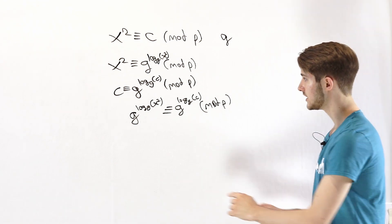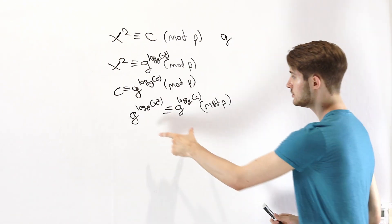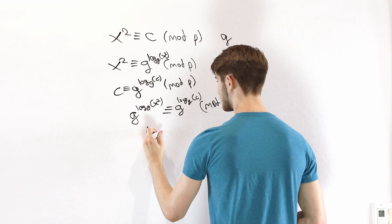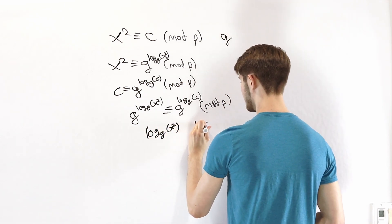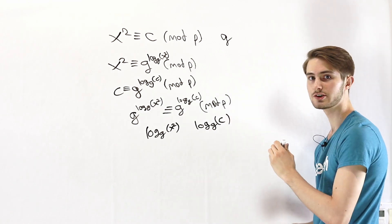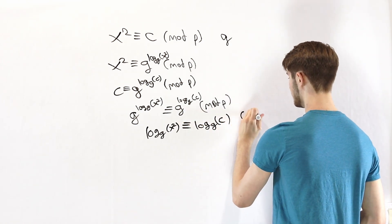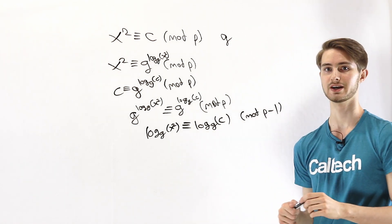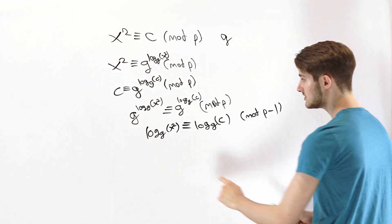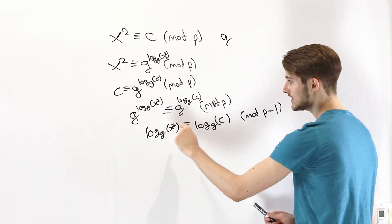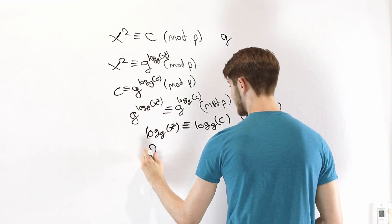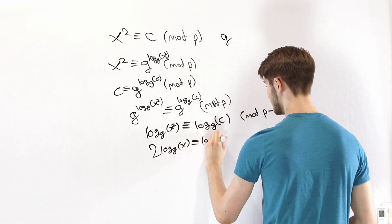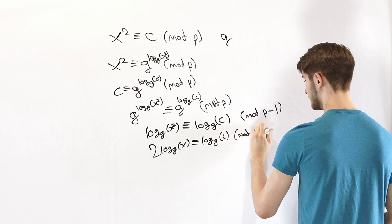One of the properties we saw with powers of a primitive root is that if two powers of a primitive root are congruent mod p, then their exponents — in this case log base g of x squared and log base g of C — have to be congruent mod p minus 1. We can then do some work with this congruence. One of the properties of indices is that if we have an exponent inside the index, we can pull it out to the front. So instead we get two times log base g of x is congruent to log base g of C mod p minus 1.